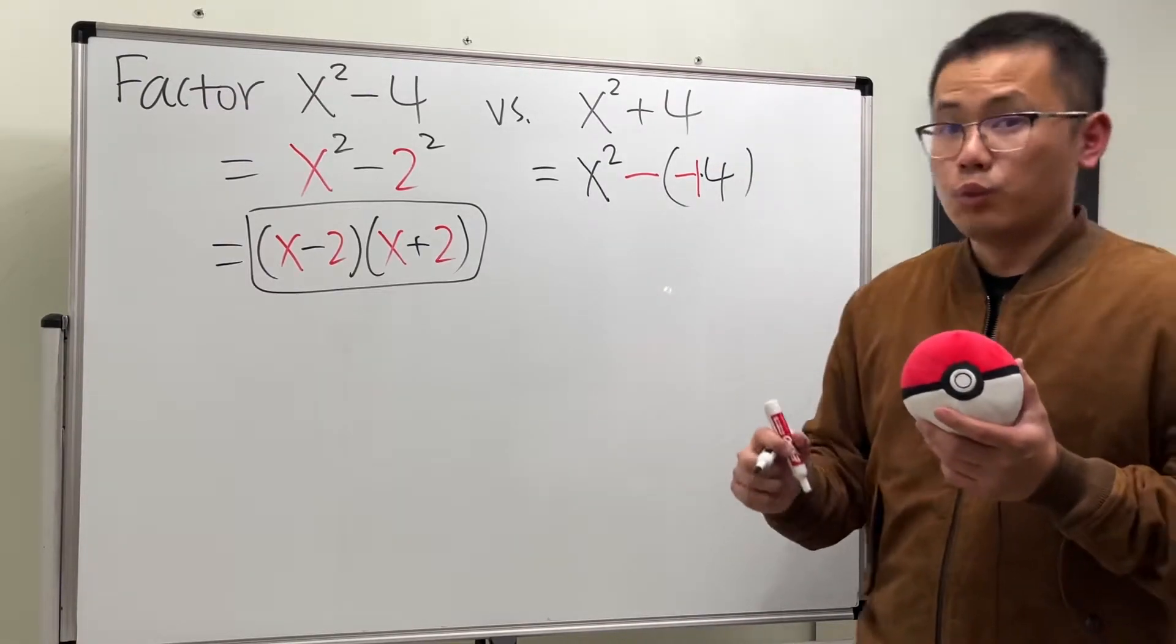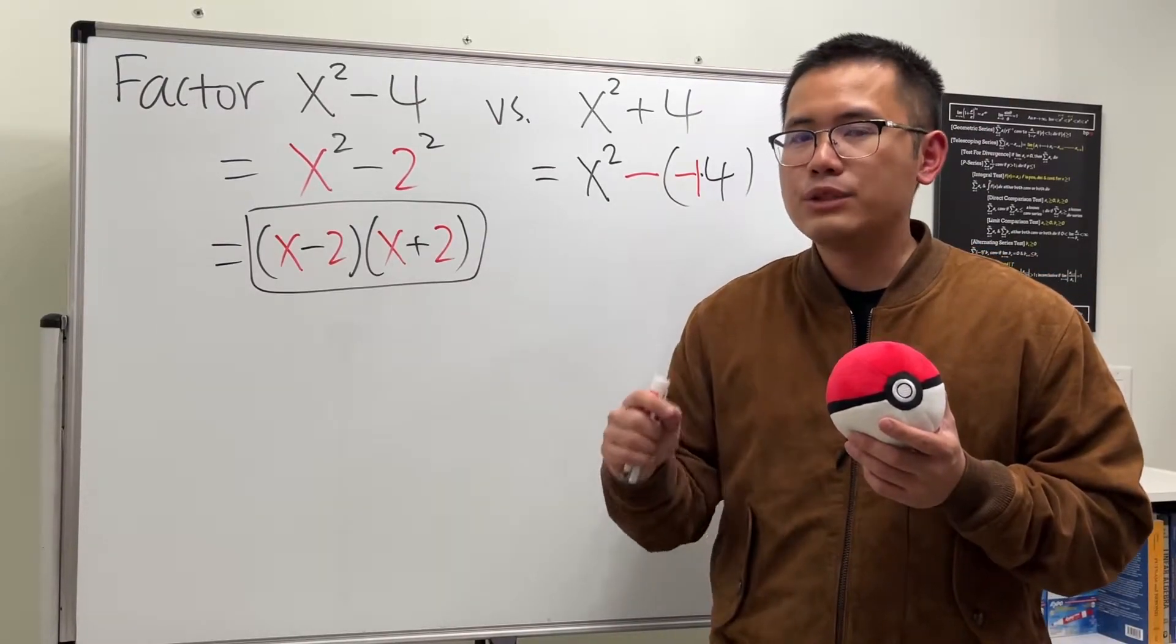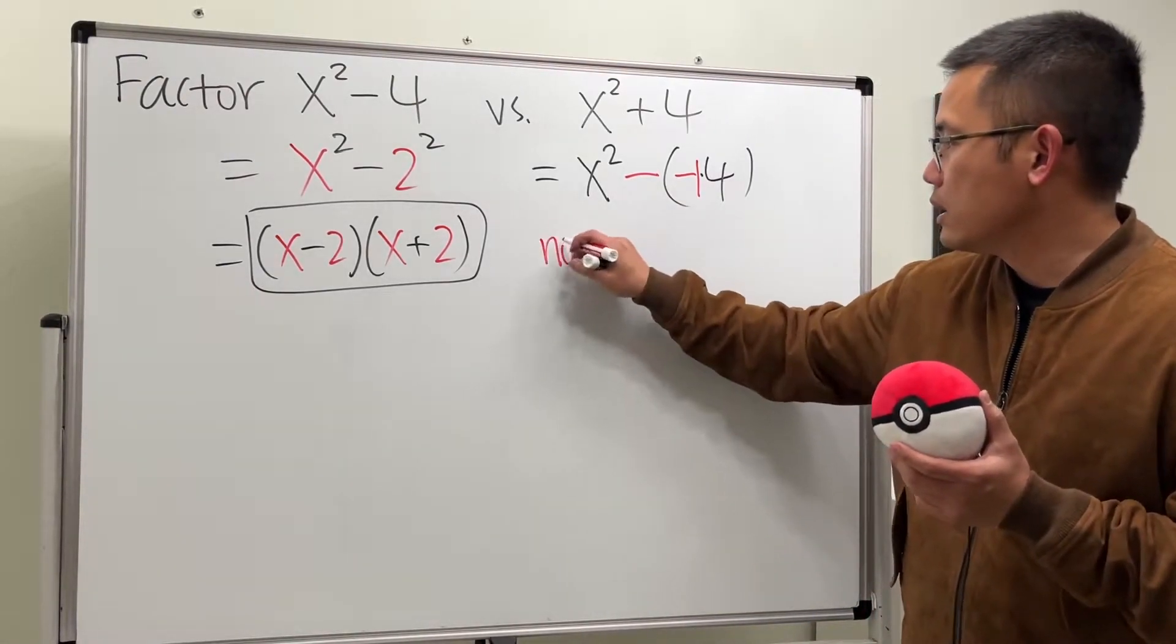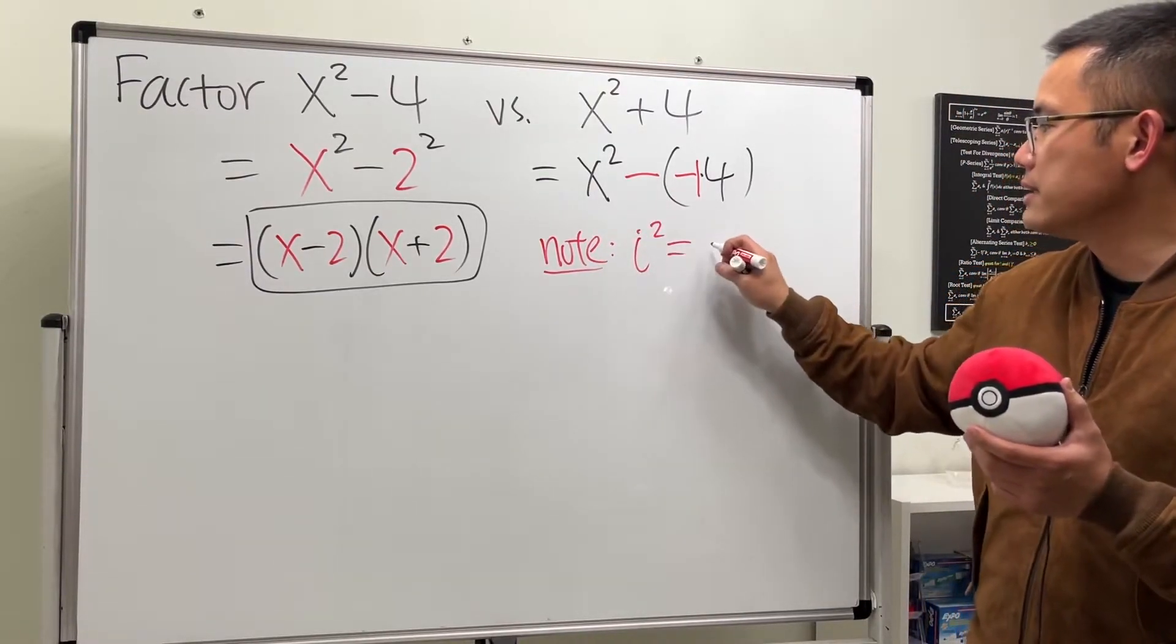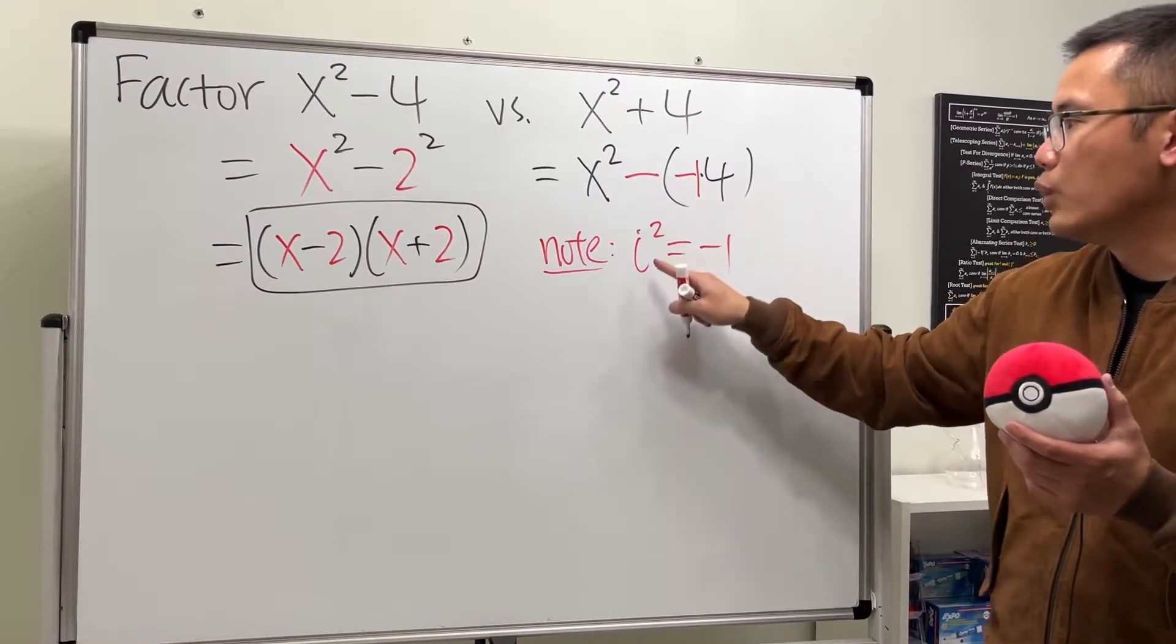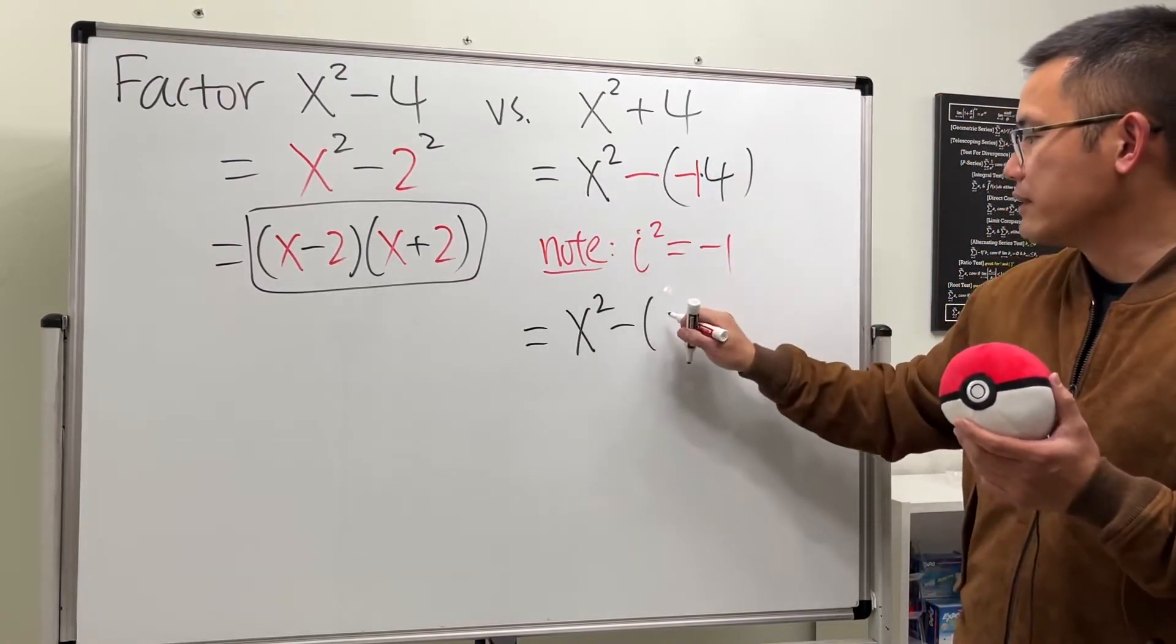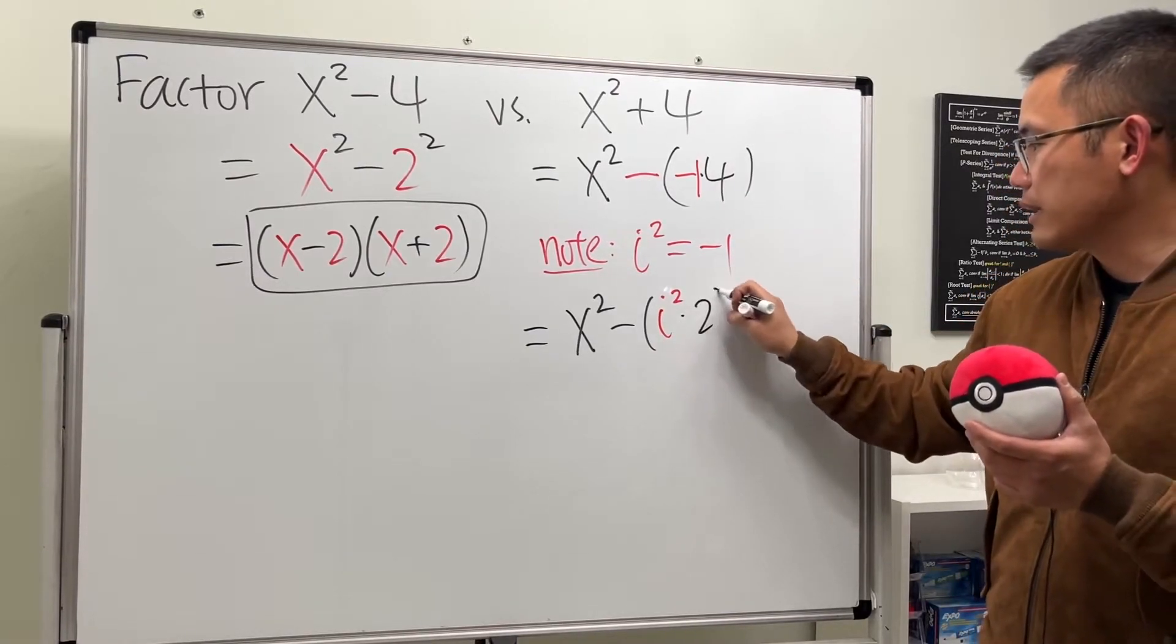And for the negative 1, the key is, that's the same as saying i to the second power, because that's the definition of i. So I would just have to tell you, note, here is the imaginary unit, i to the second power gives us negative 1. And of course, we can replace the negative 1 with i squared. So this is going to be x squared minus, and then here we have the i squared, and then the 4 is the same as 2 squared, like so.